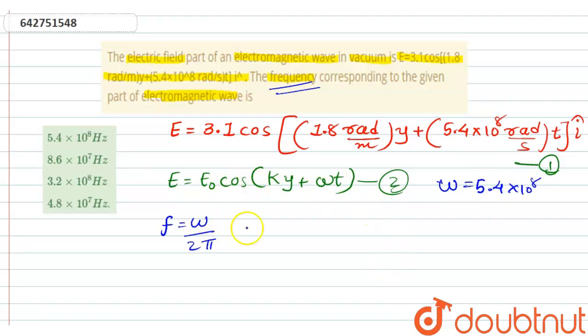So we will put omega's value in this equation. So (5.4 × 10^8) ÷ (2 × 3.14) = 8.6 × 10^7 Hz. This will be our final answer which is B.